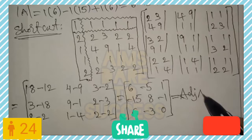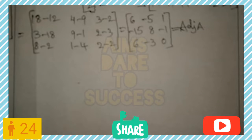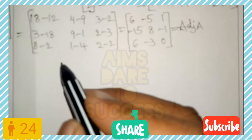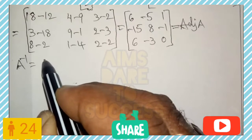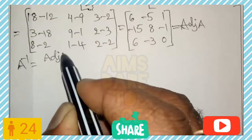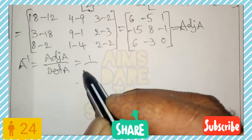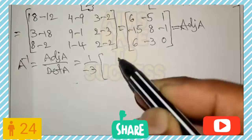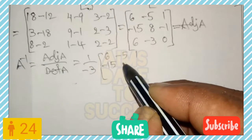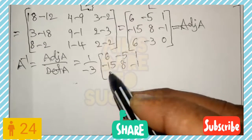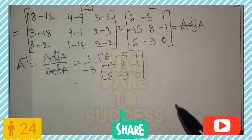After getting adjoint(A) and det(A), we find A inverse. The formula is A⁻¹ = adjoint(A) / det(A) = (1/det(A)) × adjoint(A). So A⁻¹ = (1/−3) × [[6,−5,1],[−15,8,−1],[6,−3,0]]. Do not multiply by −1/3 yet; we'll apply it after multiplying with matrix B.